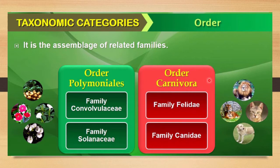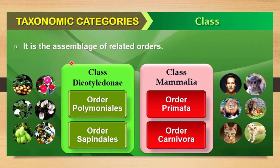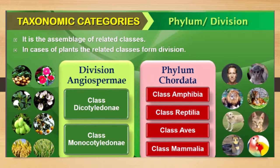The next taxonomic category is class, which is an assemblage of related orders. For plants, the class Dicotyledonae includes orders Polemoniales and Sapindales. For animals, class Mammalia includes orders Primata and Carnivora. Two or more orders together form one class.